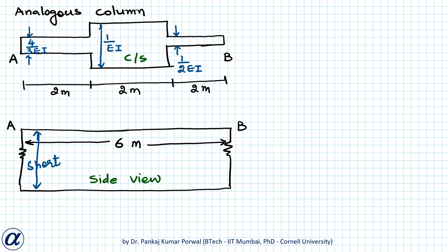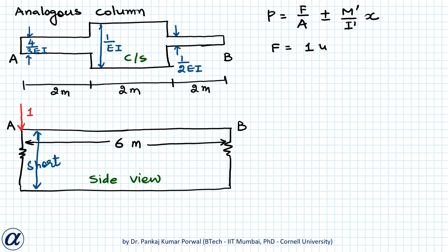On this analogous column, I will apply a unit downward force at A, corresponding to a unit rotation at A of our beam. The pressure at the base of the analogous column can be written as P equals F/A ± M'/I' · x. Here F is the total downward force acting on the analogous column, so F equals 1 unit. A is the area of cross section of the analogous column, which is the sum of areas of all 3 rectangles.